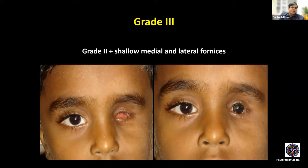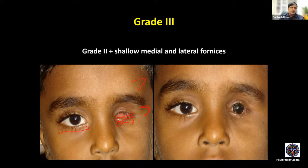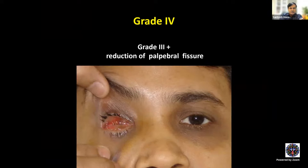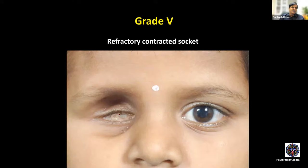Grade 3 — Grade 2 plus shallowing of the medial and lateral fornices, indicated by horizontal shortening. Compare horizontal palpable fissure of both eyes — disparity of more than 2 mm indicates shallow medial and lateral fornices, after excluding rounding of the lateral canthal angle. Grade 4 — Grade 3 plus reduction in palpable fissure, both horizontal and vertical — generalized contraction with loss of volume. Grade 5 — refractory contracted socket with keratinization of the socket, generally following external beam radiation or multiple prior surgeries.